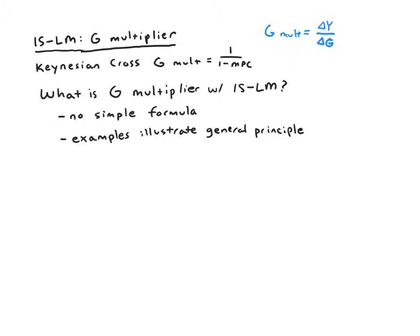So under certain circumstances, the G multiplier might be quite large. It might be you only need to spend $1 to get a $10 increase in output. So that's quite a lot of bang for your buck. We want to revisit this concept in the IS-LM model because it turns out that the Keynesian cross multiplier formula is really way oversimplified.